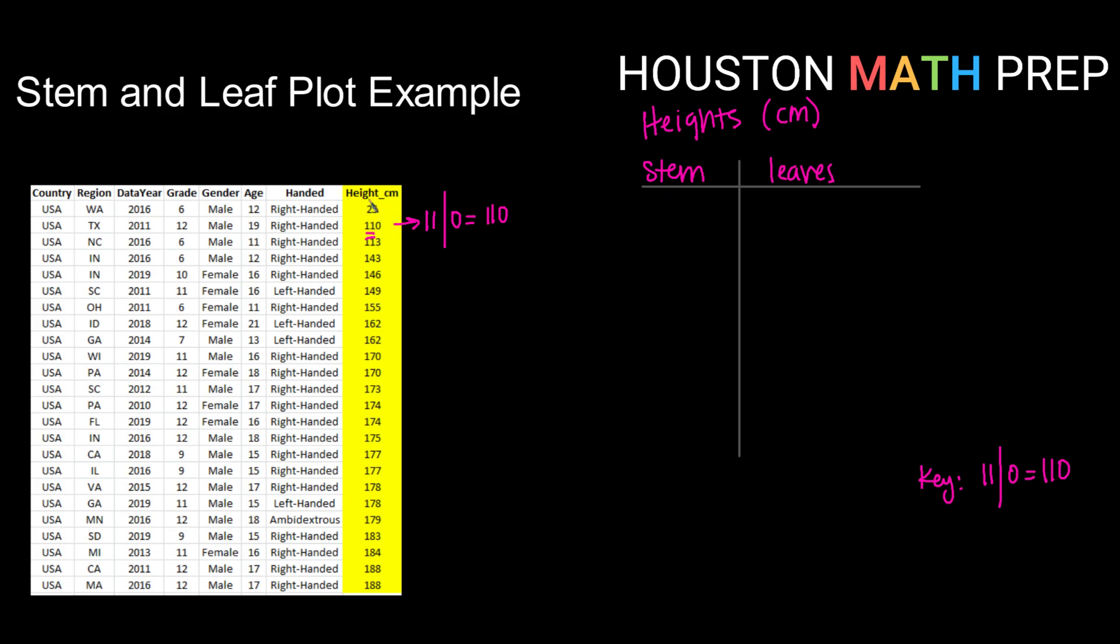I actually have one two-digit data point, so I'm going to make that stem 02. Then I will put a little squiggle here to indicate I'm skipping some and go to my next one, which would be 11.